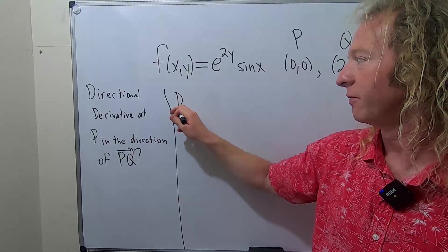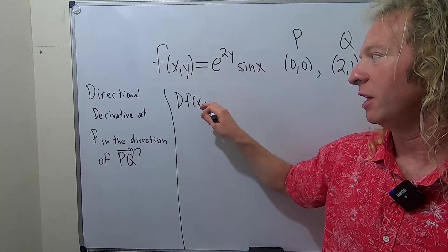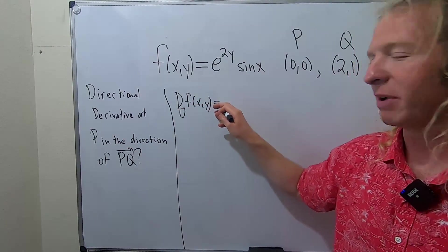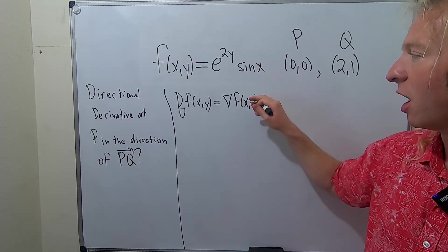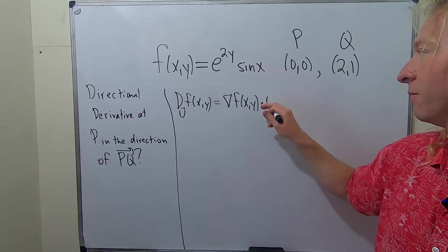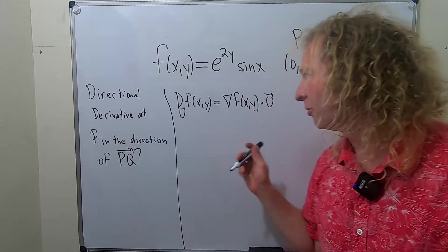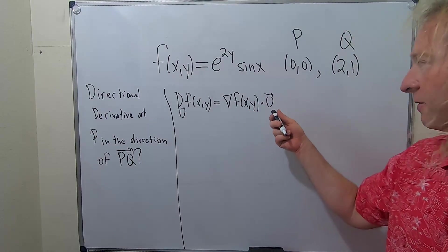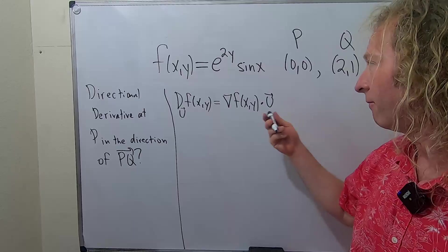The directional derivative of the function f of x, y, in the direction of a unit vector u, is given by the following formula. It's going to be the gradient vector dotted with your unit vector. So, it's a dot product. You have a couple different things we have to find here. First we can find the gradient, and then we also have to find the unit vector. Let's go ahead and find the gradient first.